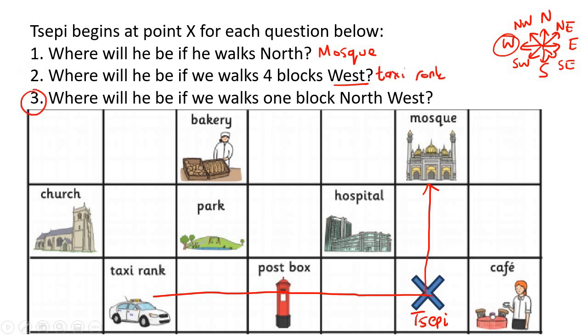Number three. Where will he be if he walks one block northwest? Now remember, northwest is north and west. So it's north and west. So it goes there. So if we go one block that way, boom, he would be at the hospital. Hospital.